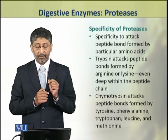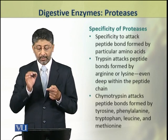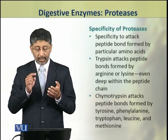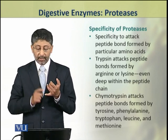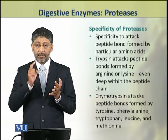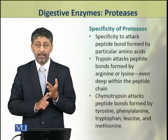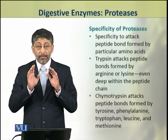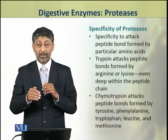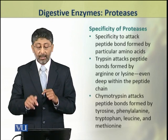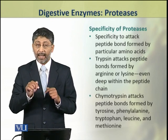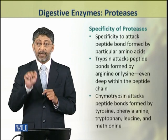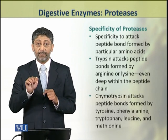Chymotrypsin attacks peptide bonds which are formed by the amino acids tyrosine, phenylalanine, tryptophan, leucine, and methionine. Chymotrypsin does not act on peptide bonds formed by other amino acids. It means that it is specific for breaking these particular peptide bonds.